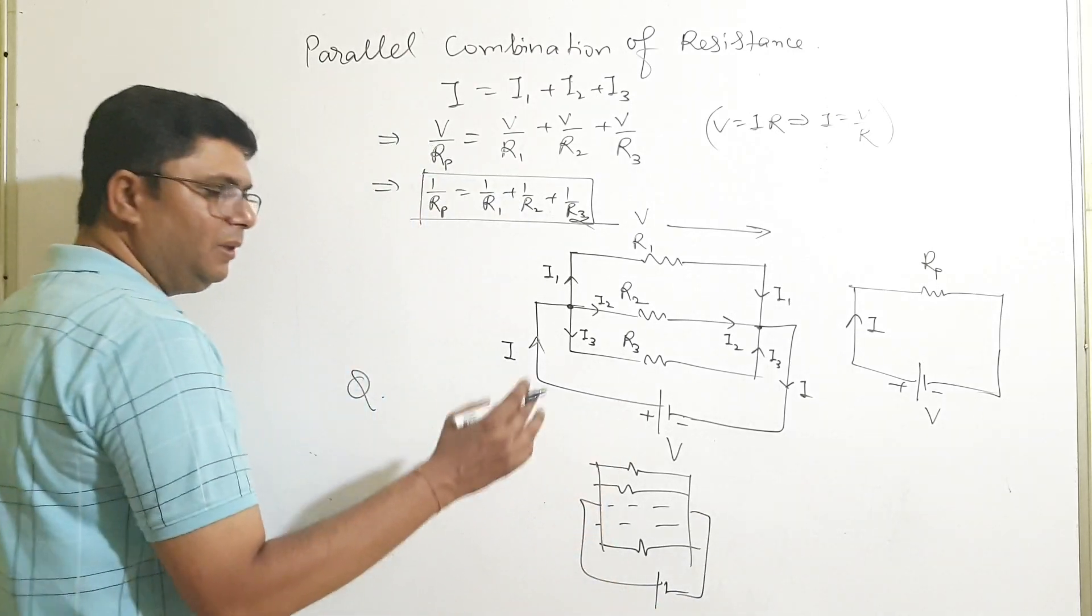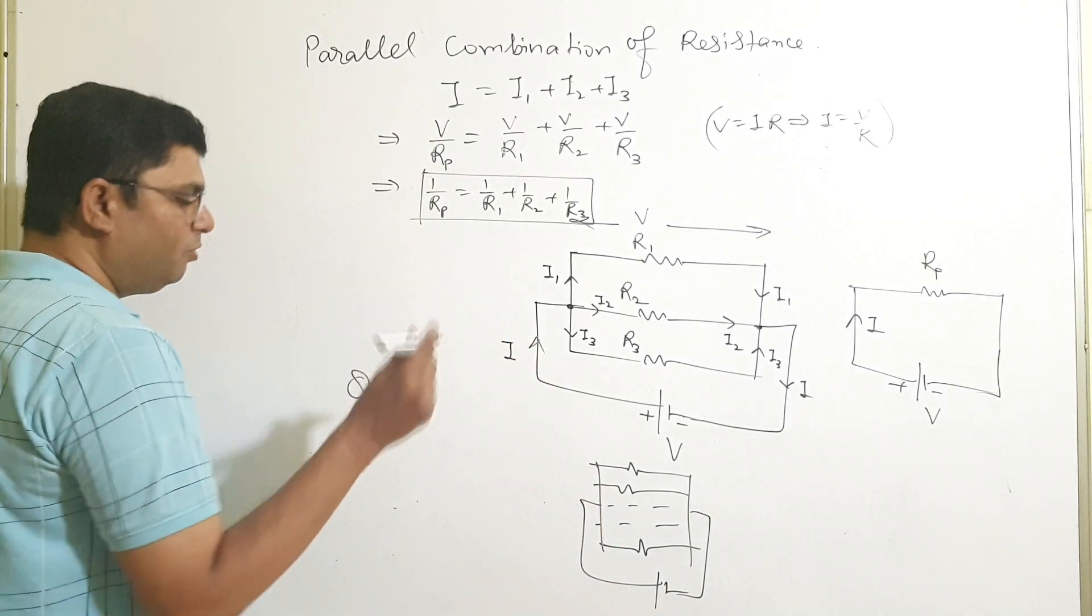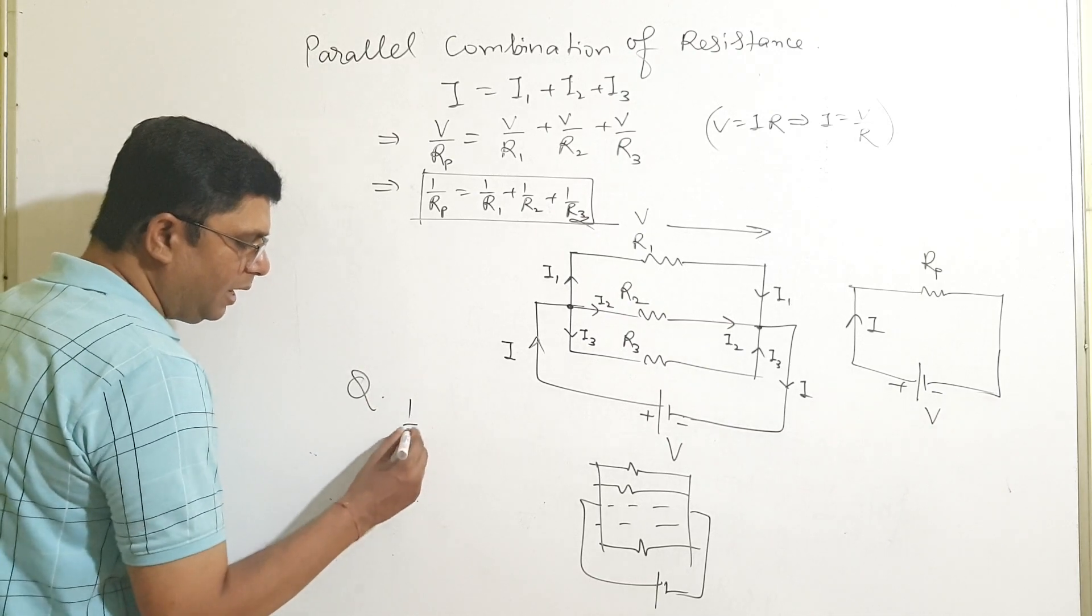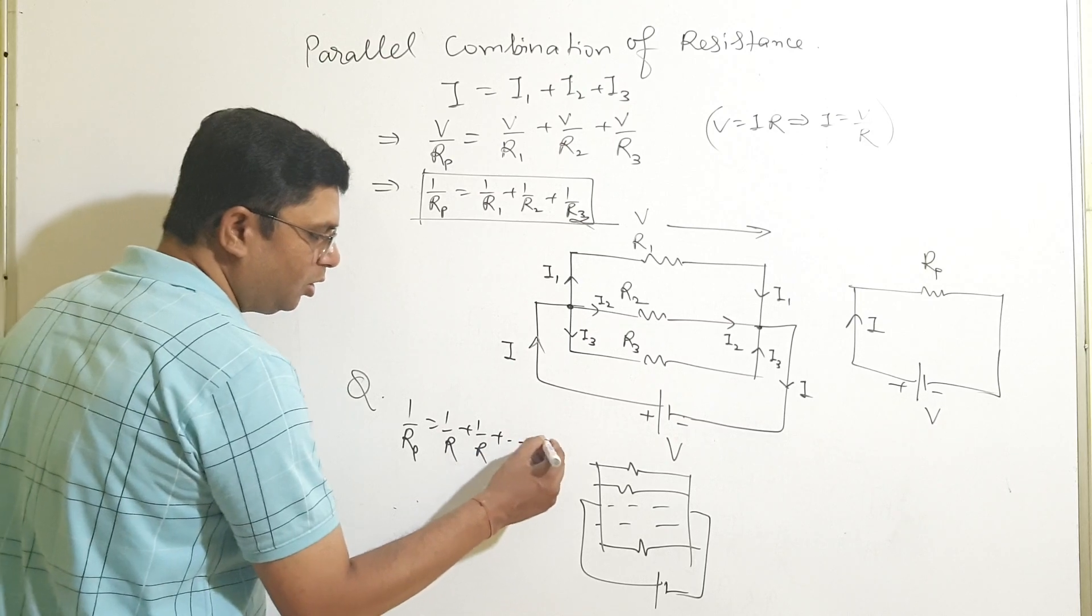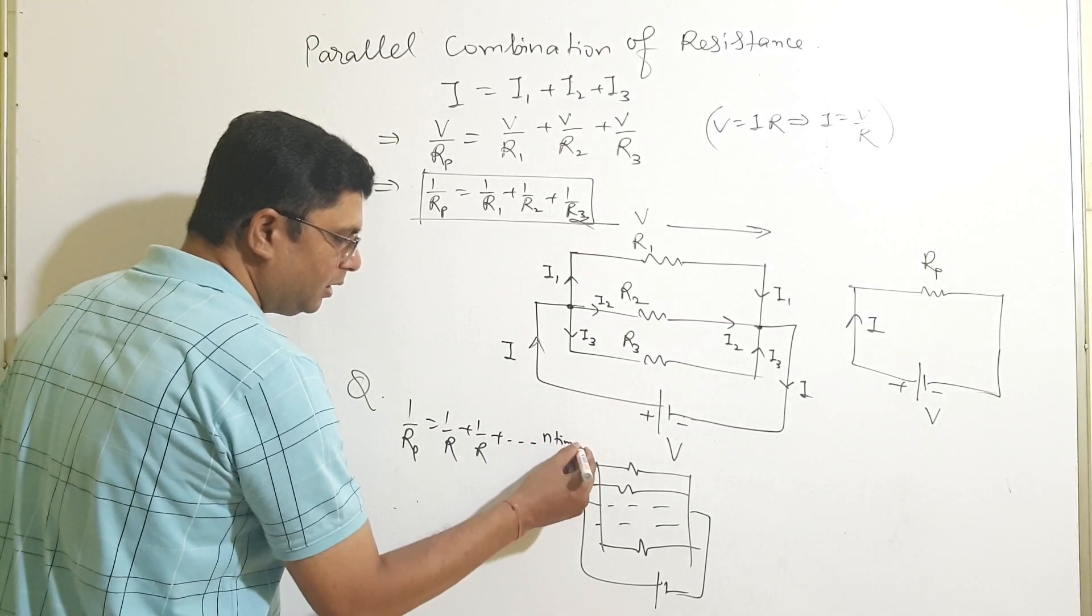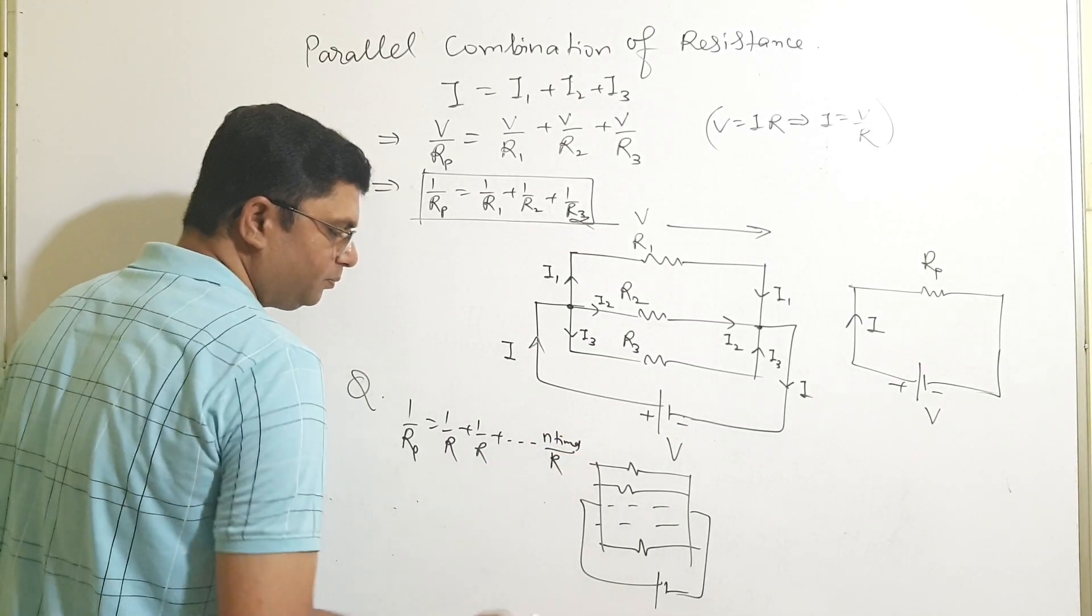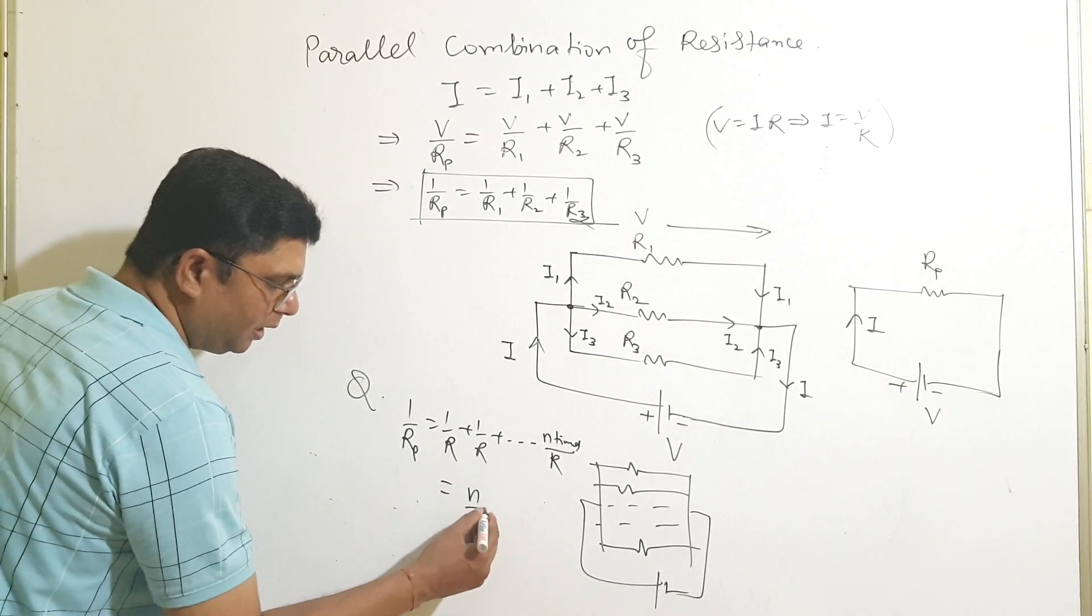Then what will be the equivalent resistance? For that we have 1 by Rp is equals to 1 by R1 plus 1 by R2 plus dot dot dot n times, n times 1 by R. So this is equals to n upon R.